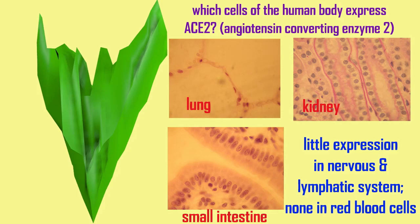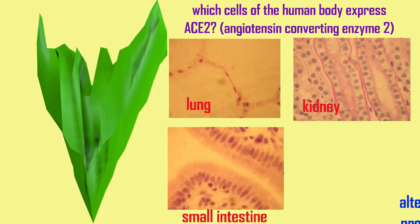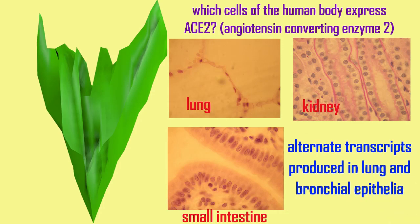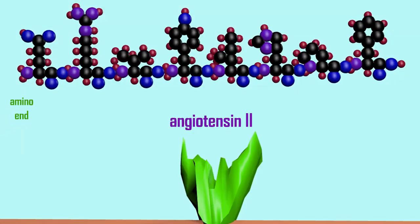Many tissues express ACE2 at lower levels, such as the nervous system and the lymphatic system, and some cells, such as red blood cells, do not express it at all.